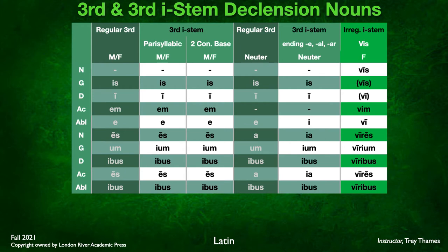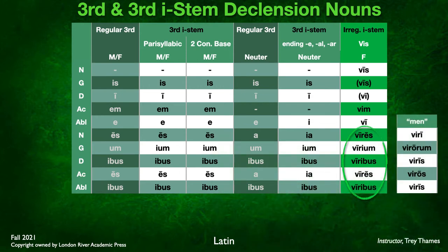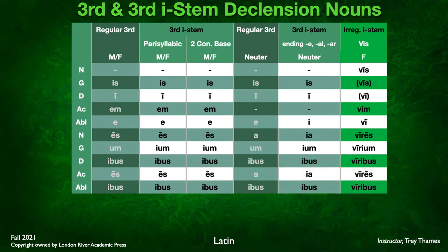Don't confuse vis with the second declension noun vir/viri, meaning man, husband, or hero. In the plural they look very similar: viri, virorum, viris, viros, viris. But you can tell them apart by the endings. If it has second declension endings like ORUM, OS, then it's the word for men. If it has third declension I-stem endings like IUM, IBUS, then it's vis. The translation differs: singular vis means force; plural vires means strength.